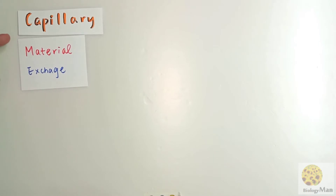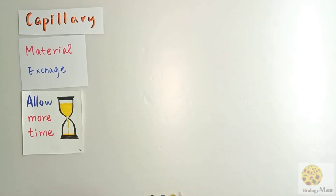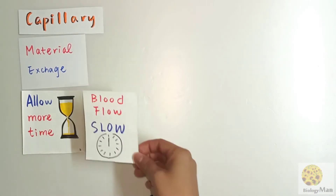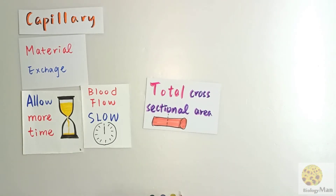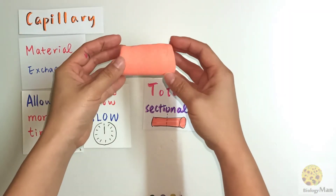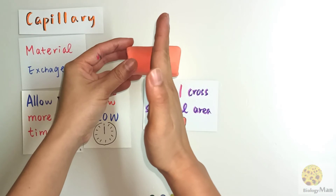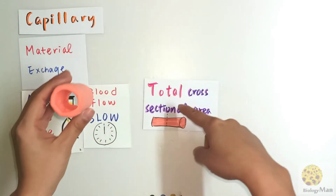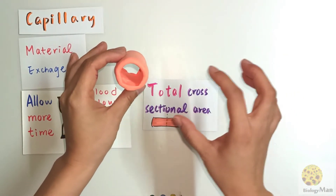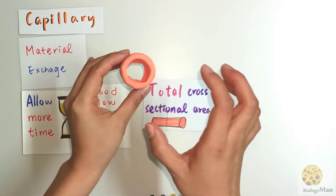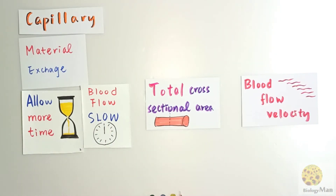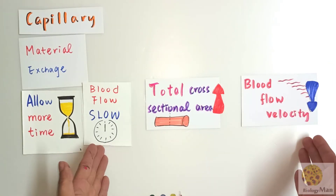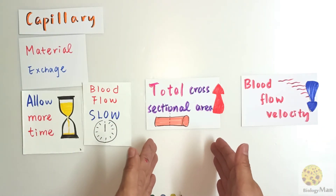The second criteria for the capillary is to allow more time for material exchange. The capillary achieves this by slowing down the blood flow. To understand blood flow velocity, we need to discuss total cross-sectional area. A cross-section is the area you see when you cut through a cylinder. If you cut 10 cylinders, you get 10 cross-sectional areas, and together that is the total cross-sectional area. When the total cross-sectional area increases, the blood flow velocity decreases. The capillary slows down blood flow by increasing the total cross-sectional area.